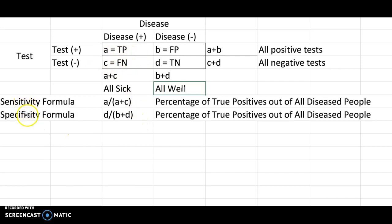So we use the sensitivity and specificity formulas. Sensitivity is a — the number of true positives — over the total number of sick, giving the percentage of true positives out of all diseased people. Whereas specificity is the percentage of true negatives out of all well people — the probability that people are actually negative.